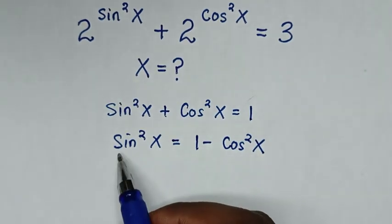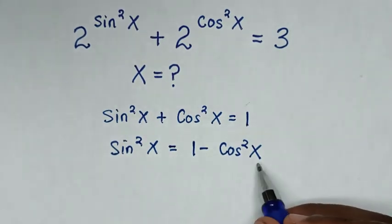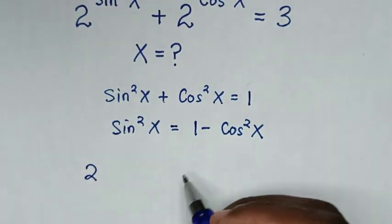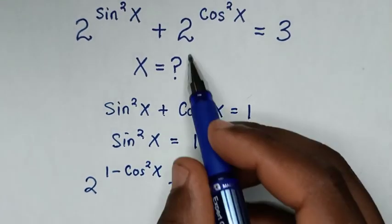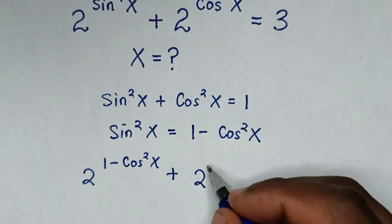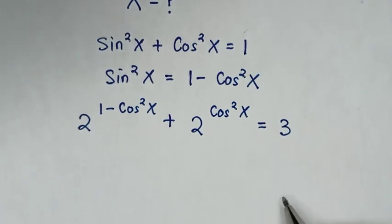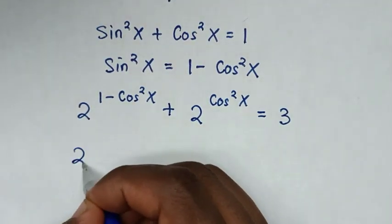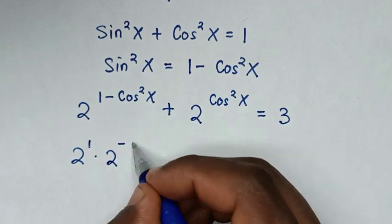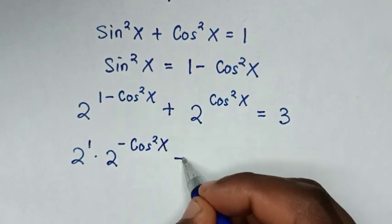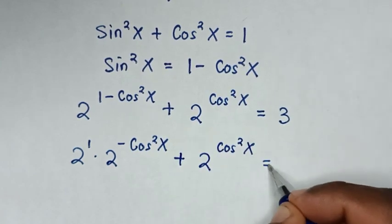Then we substitute sin²x in the exponent. So it becomes: 2 to the power of (1 - cos²x) plus 2 to the power of cos²x is equal to 3. Then in the next step, this becomes 2 to the power of 1, times 2 to the power of negative cos²x, plus 2 to the power of cos²x, equals 3.